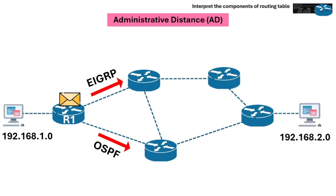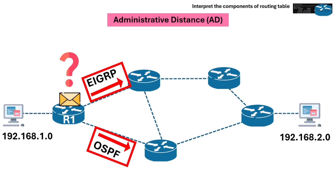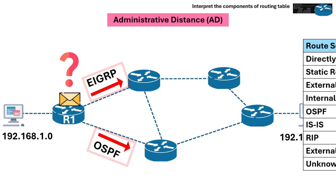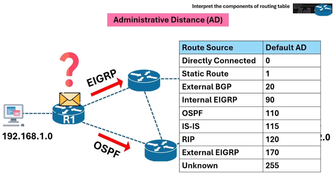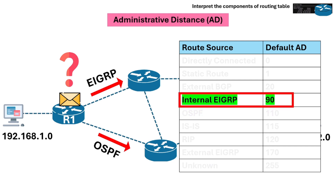Lower AD values indicate more reliable or preferred routes. For example, if both OSPF and EIGRP give routing information to router one, which routing information is the router going to use? In this case we have to look at the administrative distance — the lower the administrative distance, the better. So between OSPF and EIGRP, the router will choose EIGRP over OSPF.